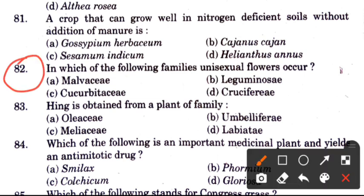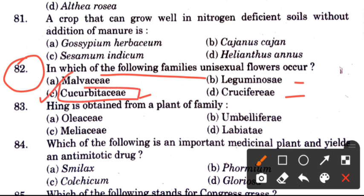Question 82: In which family do we find unisexual flowers? Options are Malvaceae, Leguminosae, Cucurbitaceae, and Cruciferae. The answer is C, Cucurbitaceae, in which we get unisexual flowers with male and female on different plants.